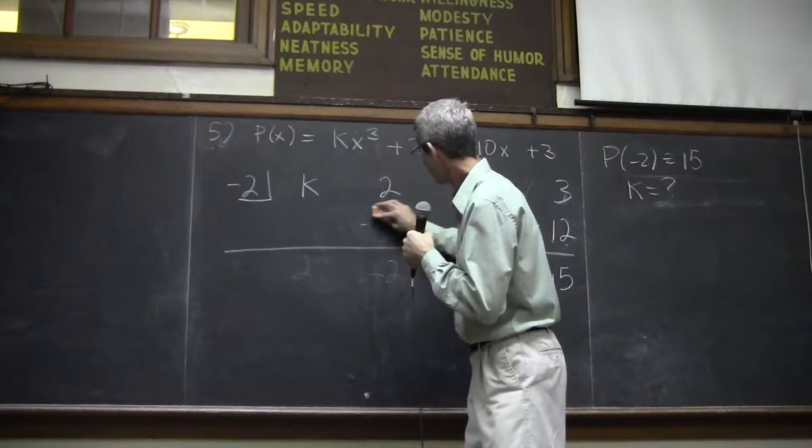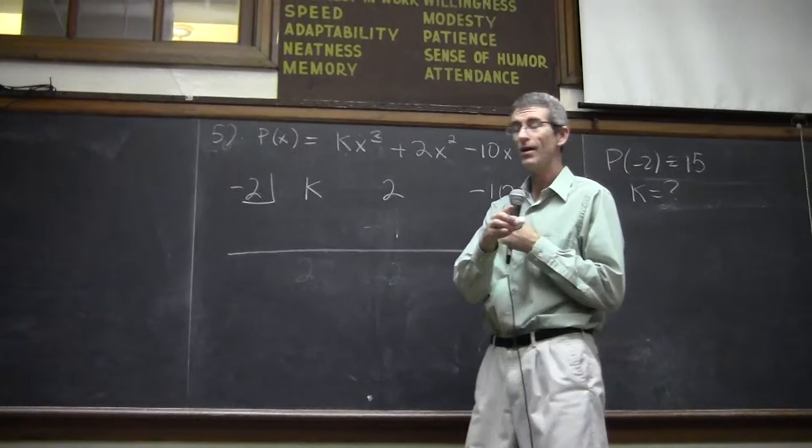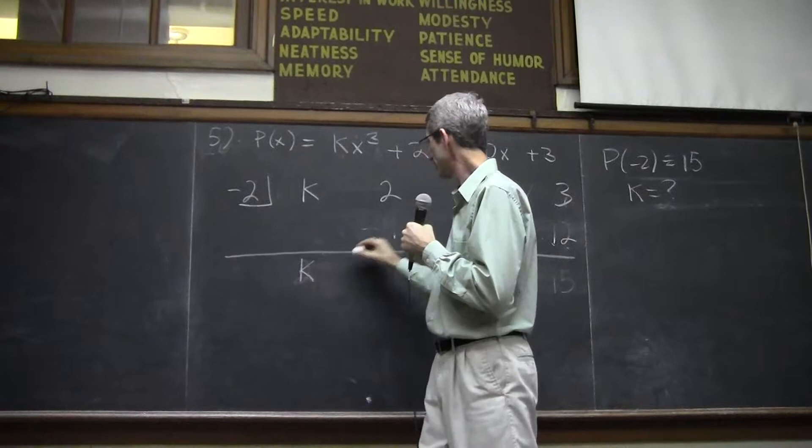Now, the way most of us did it, the more traditional way, as I'll show you, if you need it, is you would start from the left. I would drop k down. Negative 2 times k is negative 2k.